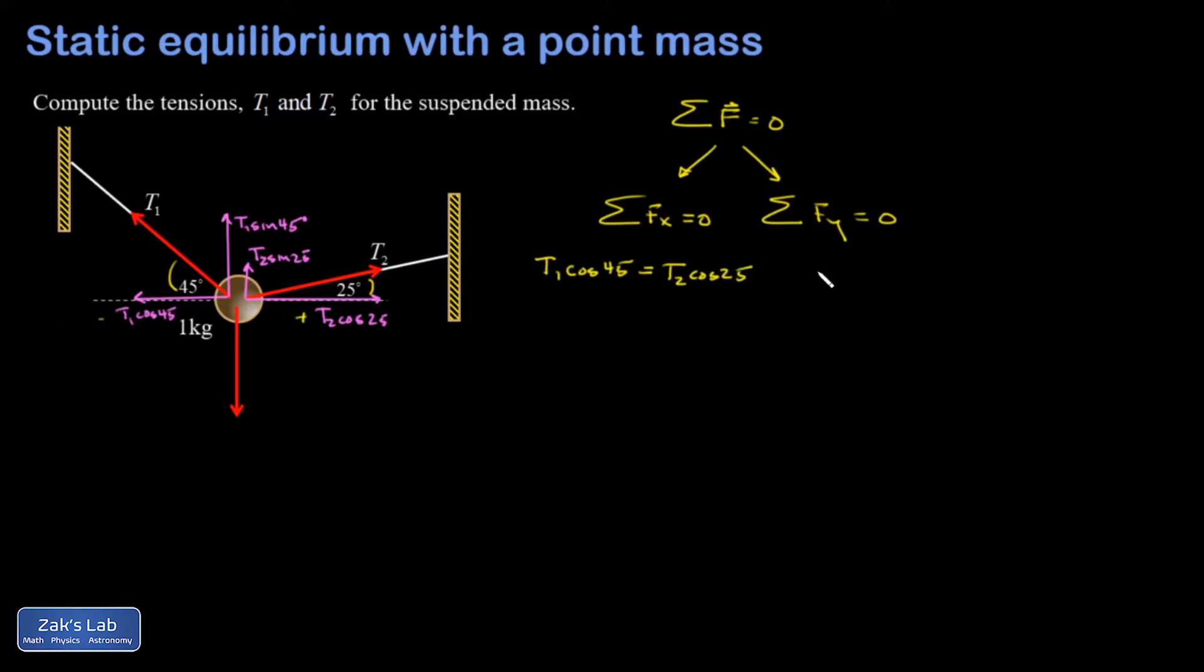If I look in the y direction, I have two forces up: T1 sine 45 plus T2 sine 25, and those have to be equal to the force downward on this thing. I have a mass of one kilogram. Gravity is pulling down on it with a magnitude of mg, that's one kilogram times 9.8 meters per second squared, which is 9.8 newtons.